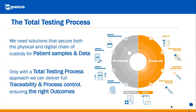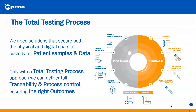We want to create a lab where, through standard work and high-quality processes, we have greater efficiency and better outcomes while leveraging the true talents of our laboratory technologists — managing a quality test result and timely distribution of those results to clinicians. Through this vision came the total testing process: how do these solutions really secure both physical and digital chain of patient samples and data from physician order to results release, keeping that loop closed so that we have full traceability and process control ensuring the right outcomes.